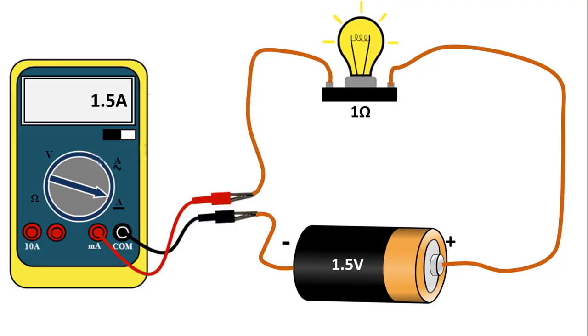If we connect a lamp in series to a battery, we can measure the current using a multimeter. If we connect this 1.5 volt battery and this lamp with a resistance of 1 ohm, we get a current of 1.5 amps.